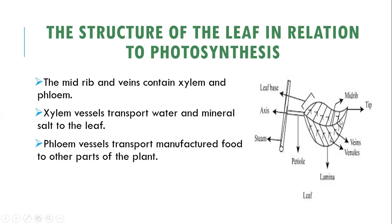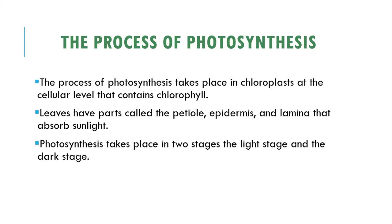The mid-rib and the veins form the outer structure of the leaf. The mid-rib and veins contain xylem and phloem vessels. The xylem vessels are responsible for transporting water and mineral salts to the leaf. The phloem vessels transport the manufactured food to the other parts of the plant. That is the structure of the leaf in relation to photosynthesis.